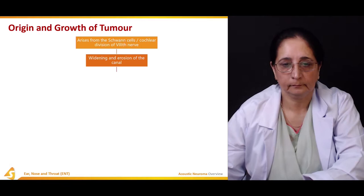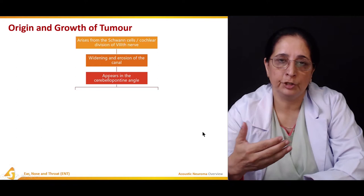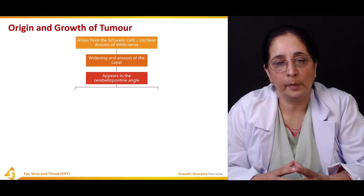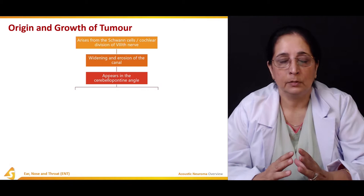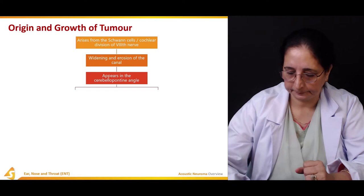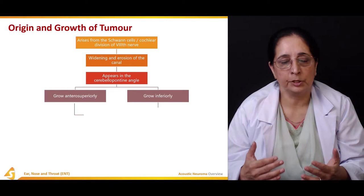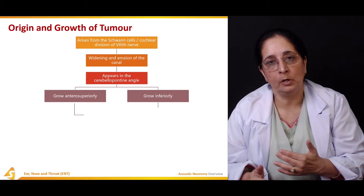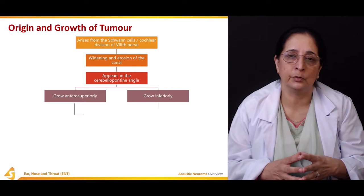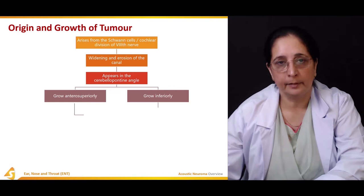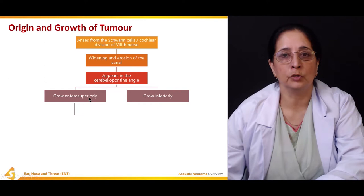As mentioned, 80 percent of acoustic neuromas appear in the cerebellopontine angle. There are two directions the tumor can grow: it can grow antero-superiorly, upward, or it can grow downward, inferiorly. The effects the tumor produces depend on the direction in which it grows.